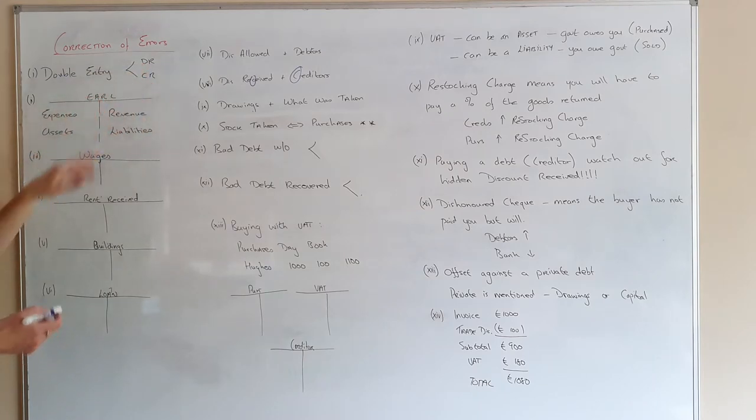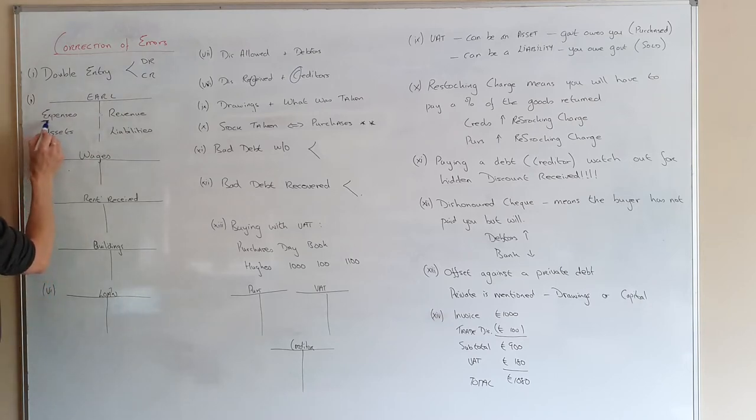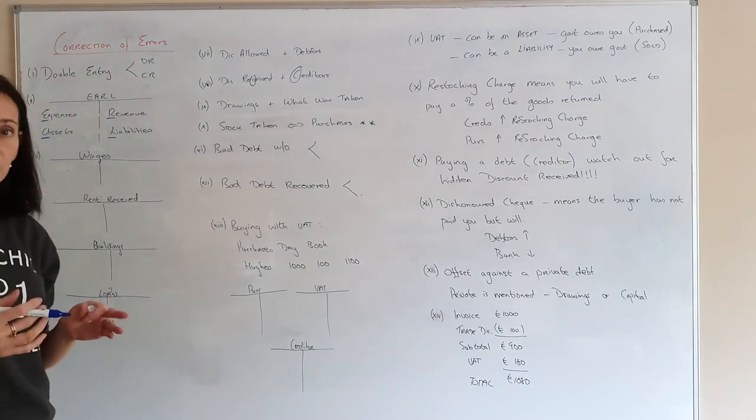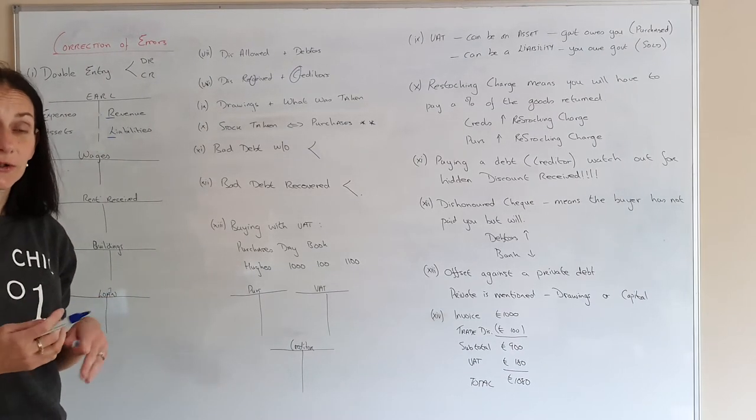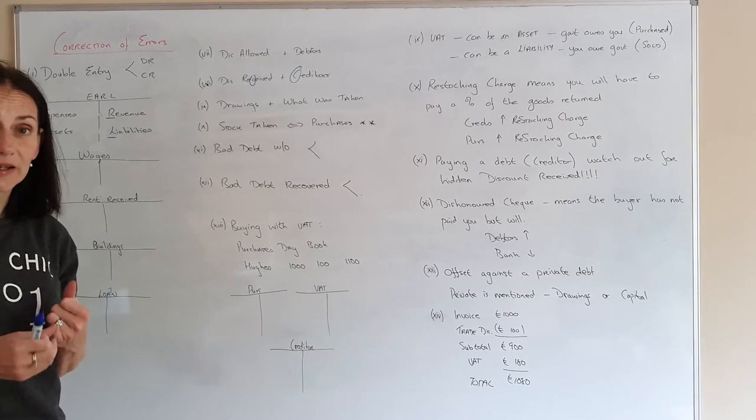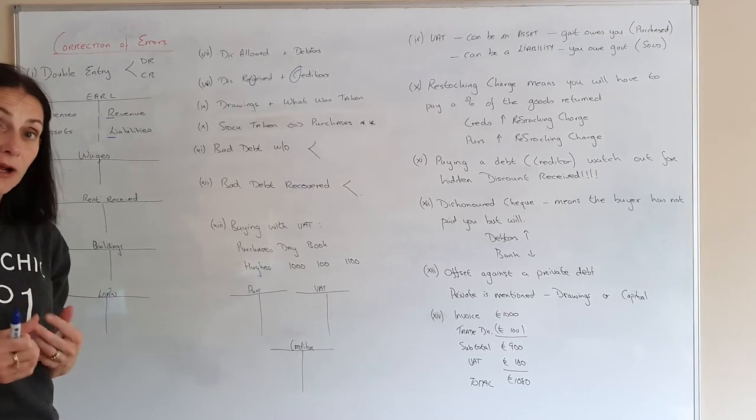Okay, EARL. Just to recap what EARL is, you have your expenses, assets, revenue and liabilities. So no matter what you're going to talk about, you have to identify which of the four it is. So you must say if it's an expense, an asset, revenue or a liability.